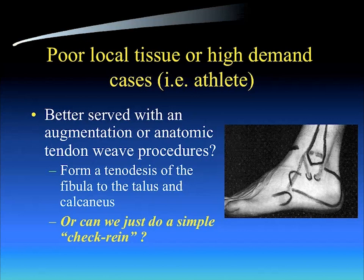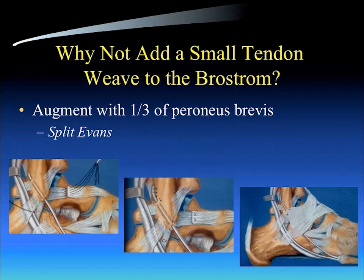There are cases where individuals with poor local tissue or high-demand cases may be better served with an augmentation or the addition of an anatomic tendon weave procedure to the Brostrum itself. Basically, what we're trying to do is form some type of tenodesis from the fibula to the talus and the calcaneus — a simple check rein, adding a little augmentation to the Brostrum-Gould to serve as a check rein to inversion stresses.